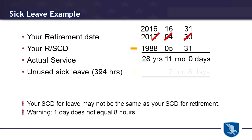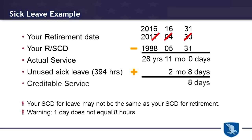Now let's assume you had 394 hours of sick leave. That would equate to two months, eight days from our sick leave conversion chart. Let's add that creditable service together — we'll have eight days, 13 months, 28 years. Obviously 13 months will create another year, so we actually have creditable service of 29 years, one month, eight days.